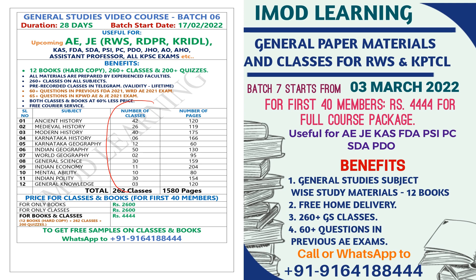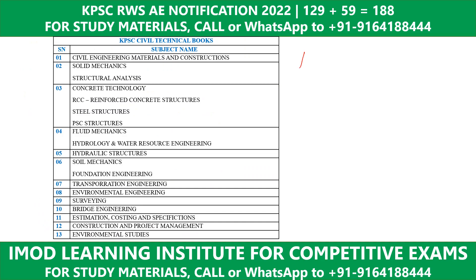For each subject, the number of classes provided are listed. You can check the GS course Paper 1 details — if you want to buy or view samples, contact the provided number.